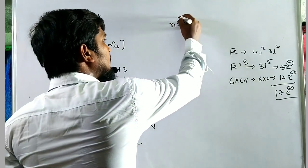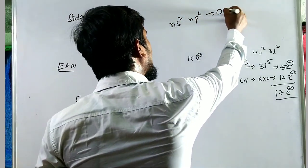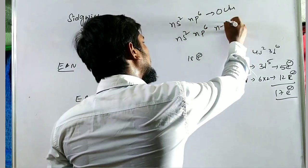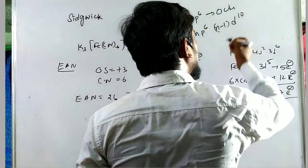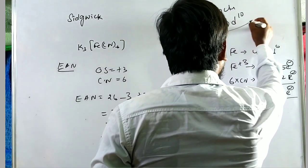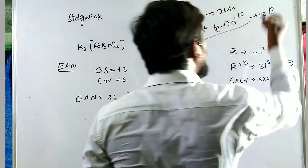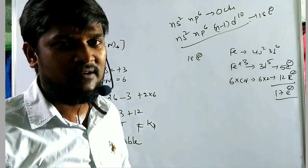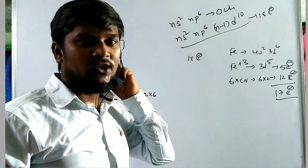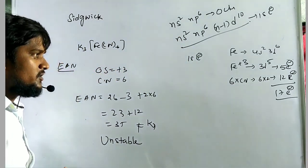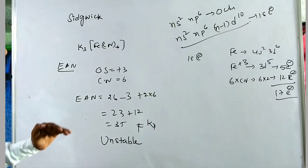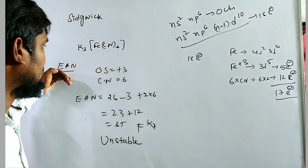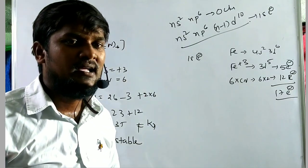The 18-electron rule corresponds to the configuration ns², np⁶, (n−1)d¹⁰ — a completely filled outermost shell. The stability of complex compounds is explained by two approaches: the effective atomic number (EAN) method and the 18-electron rule.